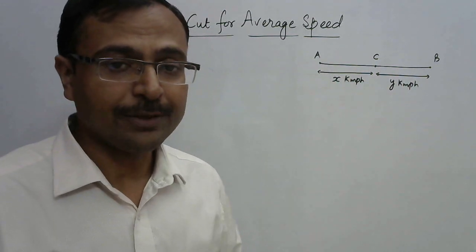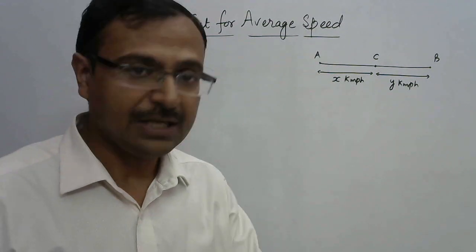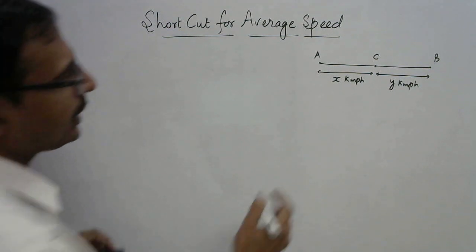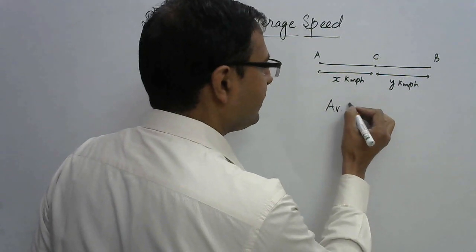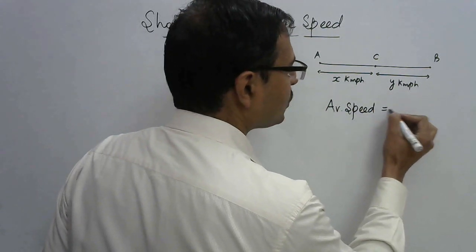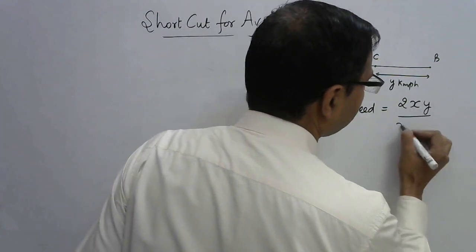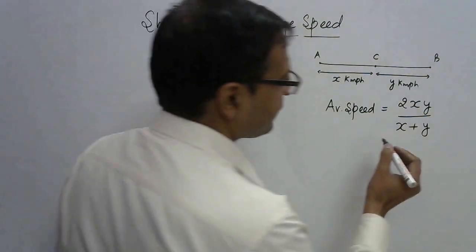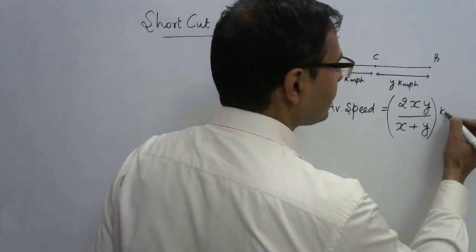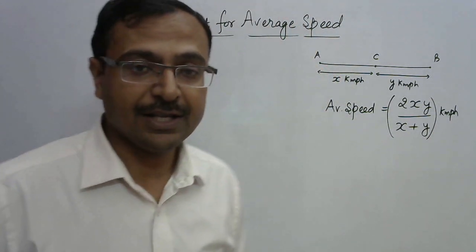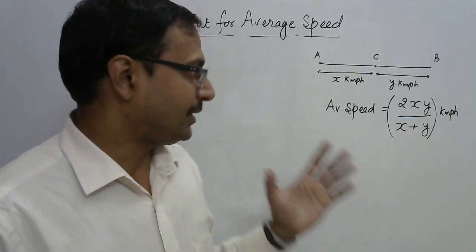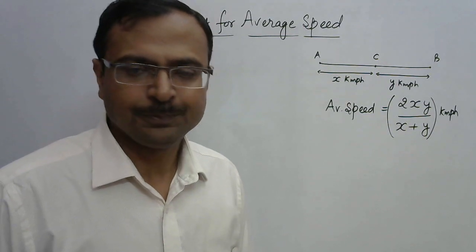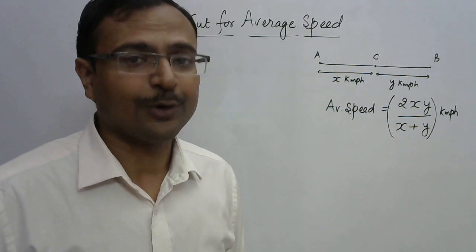In the case of two equal distances, you can find the average speed directly by using the relationship 2xy upon (x + y). This relationship — 2xy upon (x + y) — in kmph will be the answer for finding the average speed of two distances covered with unequal speeds. Very easy, right?